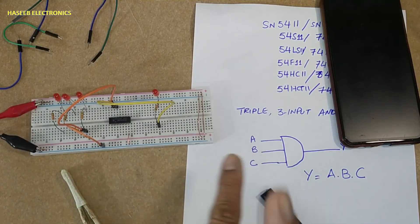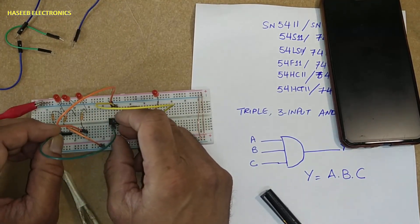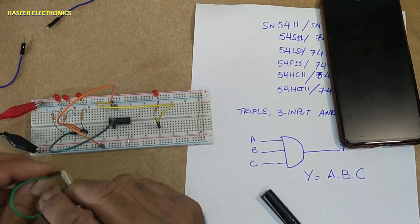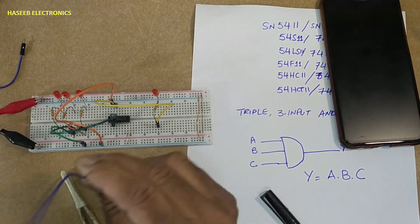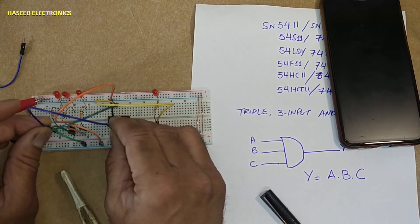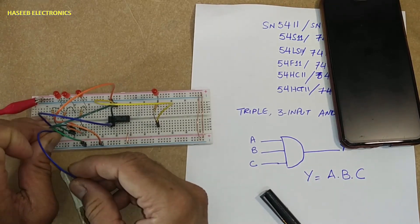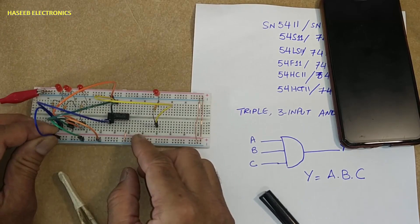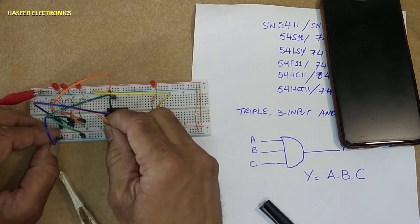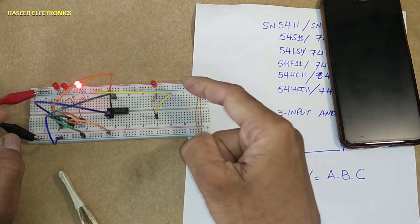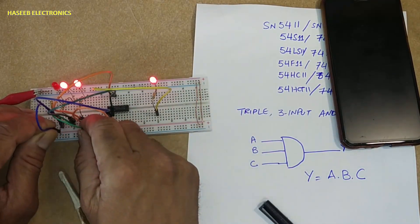When I will connect it to ground, now our condition is fulfilled that any input or all inputs are low, output will be low. Pin number 2 input, it is also low. Pin number 1, first input for first output is low. One input high, output is low. One input high, output is low. Second high, output low.